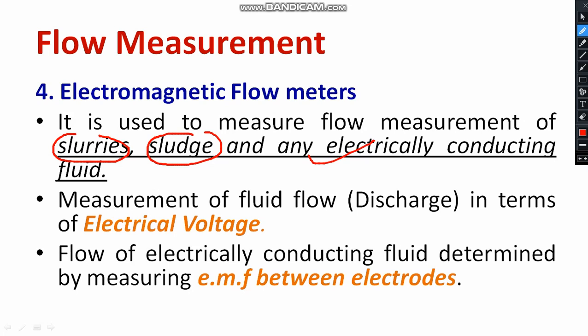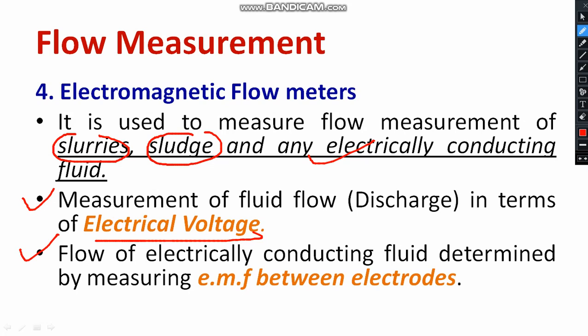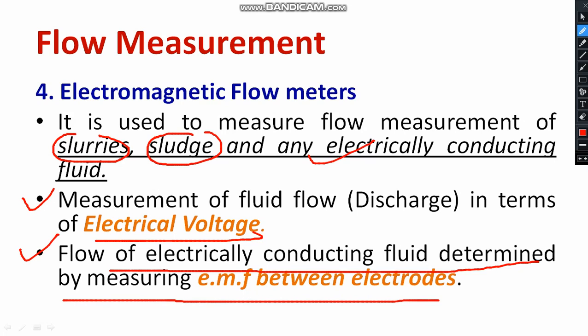A non-electrical quantity is converted into an electrical quantity — that is why the electromagnetic flow meter is a transducer. The pitot tube, venturi meter, and orifice meter are not transducers in that sense, but the electromagnetic flow meter is purely a transducer. The discharge is measured in terms of electrical voltage, and EMF is generated across the two ends of the conduit with respect to fluid flow.